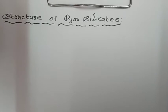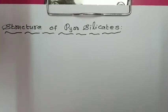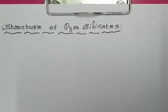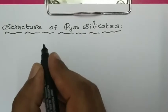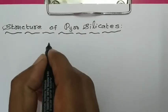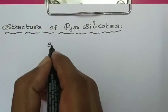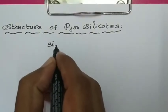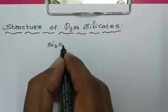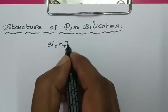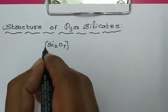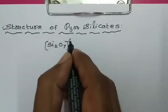We are going to see how to draw the structure of pyrosilicate. Pyrosilicate contains the Si₂O₇⁶⁻ ion.